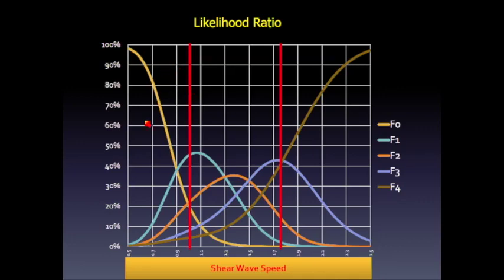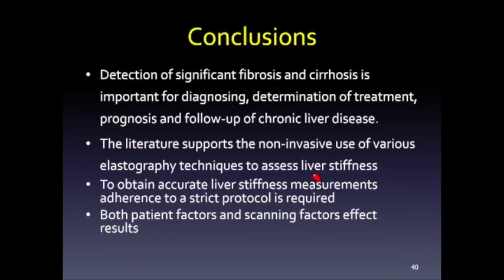In conclusion, we have a low cutoff below which findings are normal and a high cutoff above which there is a very high probability of severe fibrosis or cirrhosis. Detection of significant fibrosis and cirrhosis is important for diagnosis, determination of treatment, prognosis, and follow-up of chronic liver disease. The literature supports the noninvasive use of various elastography techniques to assess liver stiffness, but obtaining accurate measurements requires adherence to a very strict protocol, as both patient factors and scanning factors affect results.